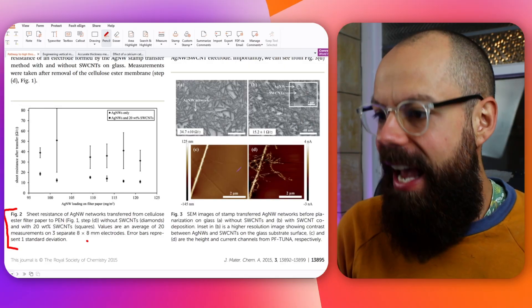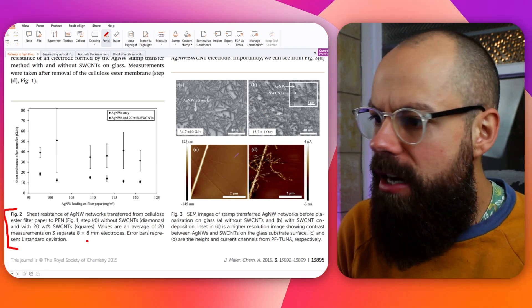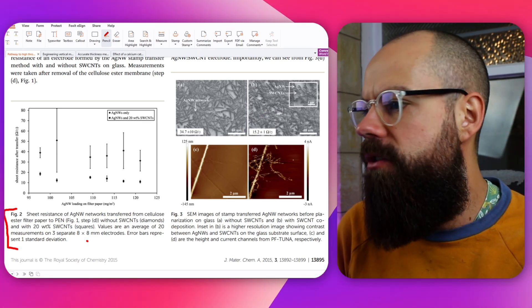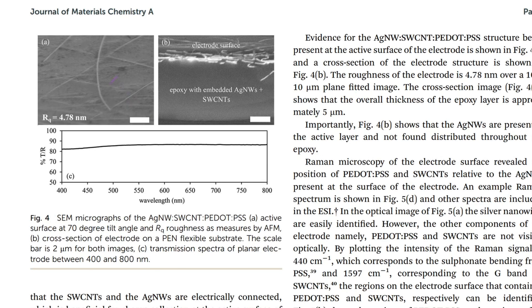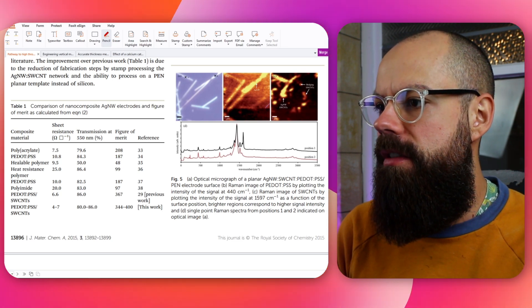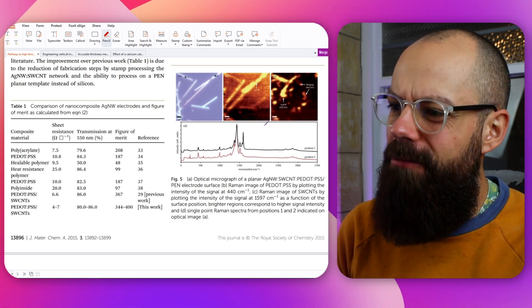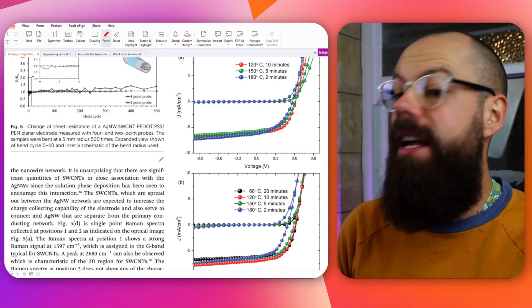I know this is SEM, I know this is AFM just by looking at the figure. What's the scale bar? They're electrically conductive — that's a conductivity measure, there's the current. More SEM images, then T over R — I don't understand that, so I go to the caption: transmission spectra. There's an optical micrograph, and those are Raman images — I don't know much about that, but it's interesting for later. I go through the figures knowing about JV curves.